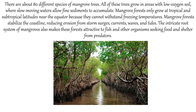Mangrove forests stabilize the coastline, reducing erosion from storm surges, currents, waves and tides. The intricate root system of mangroves also make these forests attractive to fish and other organisms seeking food and shelter from predators.